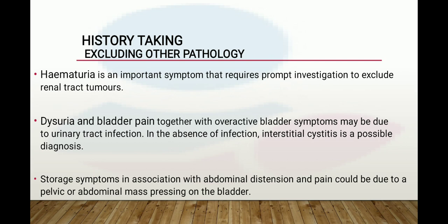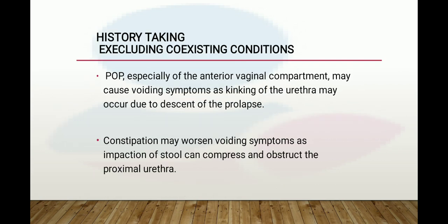Dysuria and bladder pain together with overactive bladder symptoms may be due to urinary tract infection; in the absence of infection, interstitial cystitis is a possible diagnosis. Storage symptoms associated with abdominal distension and pain could be due to pelvic or abdominal masses pressing on the bladder. Pelvic organ prolapse, especially of the anterior vaginal compartment, may cause voiding symptoms. Constipation may worsen voiding symptoms as impaction of stool can compress and obstruct the proximal urethra.